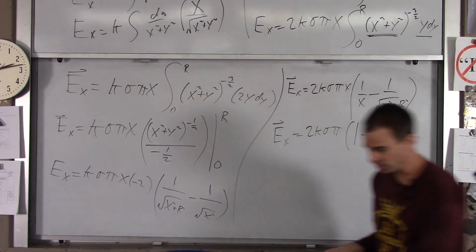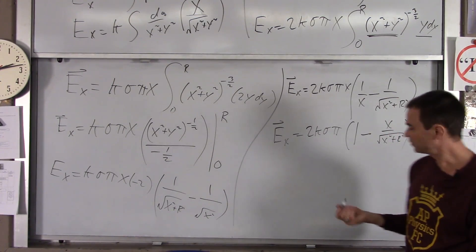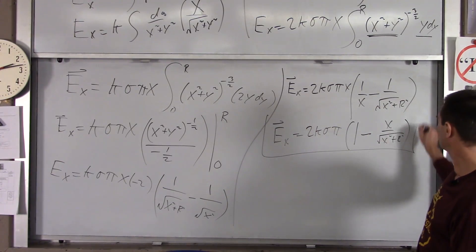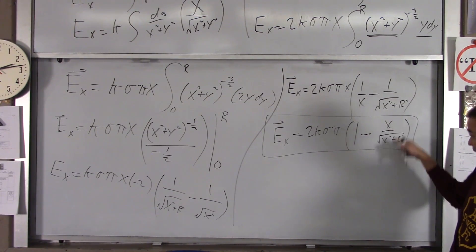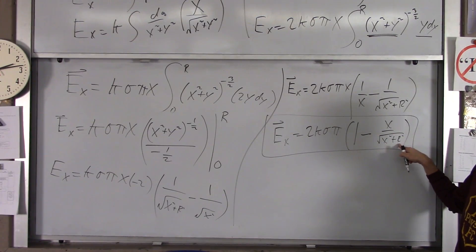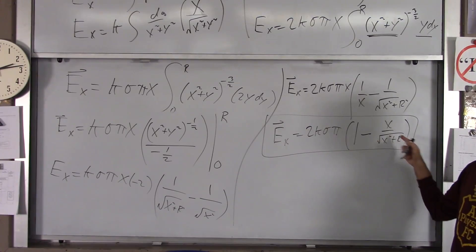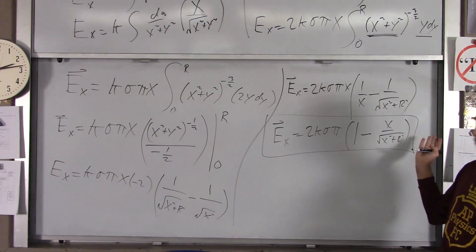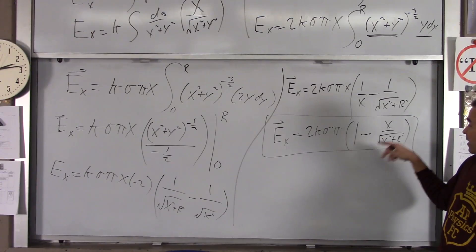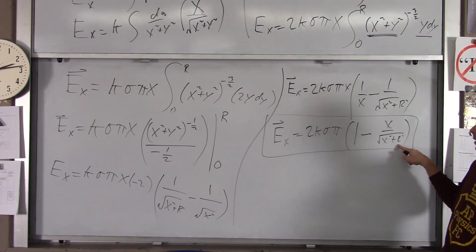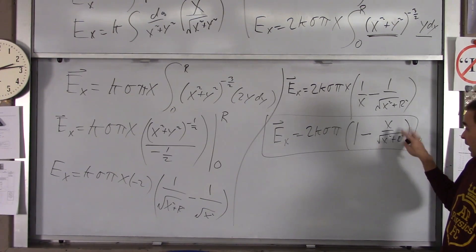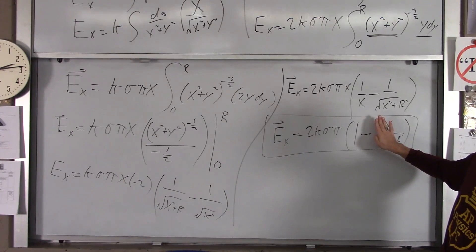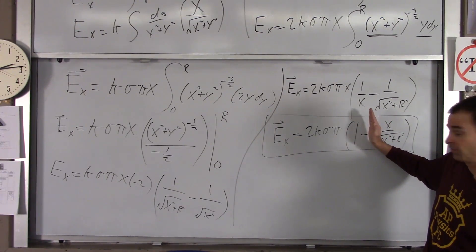Distributing the x into the bracket gives the even simpler final answer: E_x = 2kσπ times (1 − x/√(x² + R²)). Notice that as x gets very large, x/√(x² + R²) approaches 1, so the whole expression approaches 0 — the field goes to zero far away. If x is small compared to R, then x/√(x² + R²) approaches 0, and you get the maximum field value near the disk.